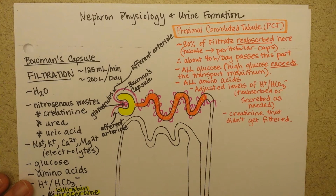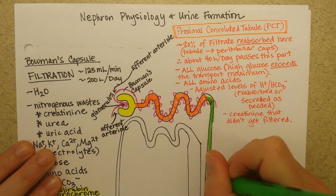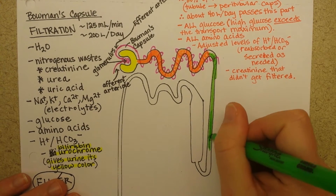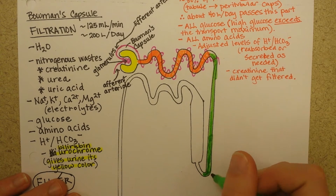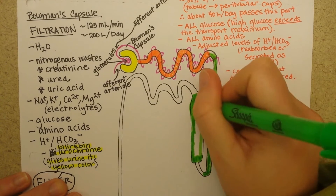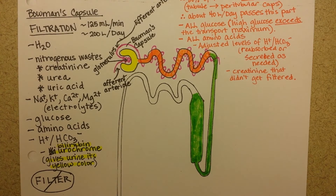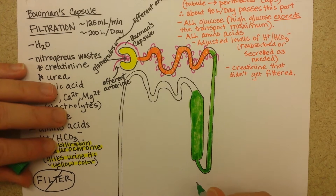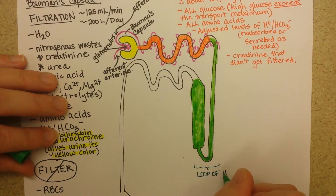Welcome back to part 2 of Nephron Physiology and Urine Formation. Let's start with a green highlighter and color in the thin descending limb of the loop of Henle, and we'll go ahead and do the thick ascending limb too in green. This whole thing is called the loop of Henle, named after the anatomist that described it.